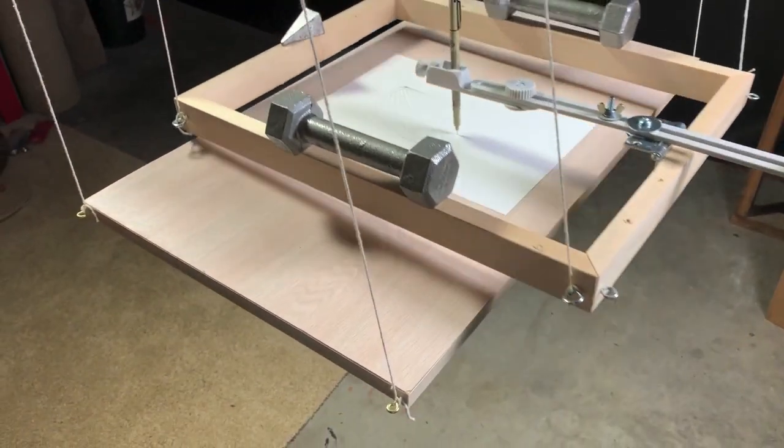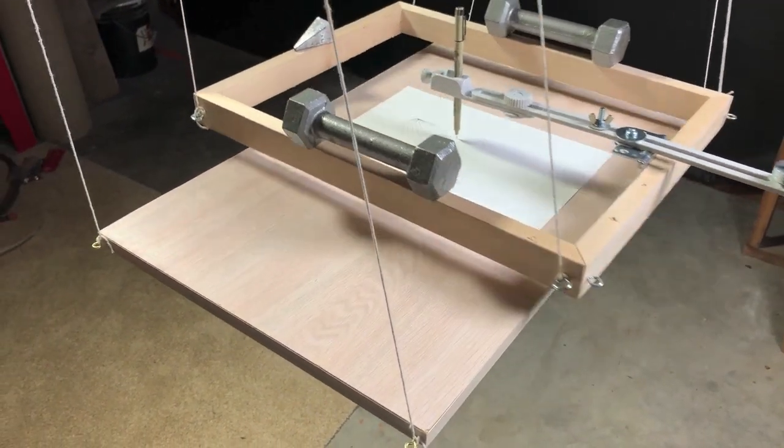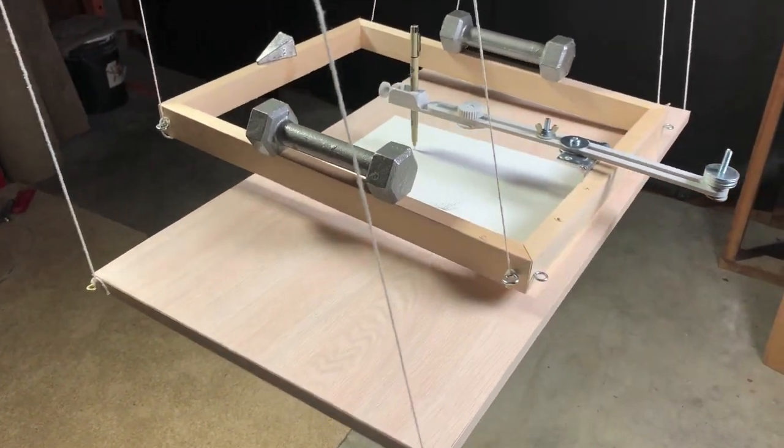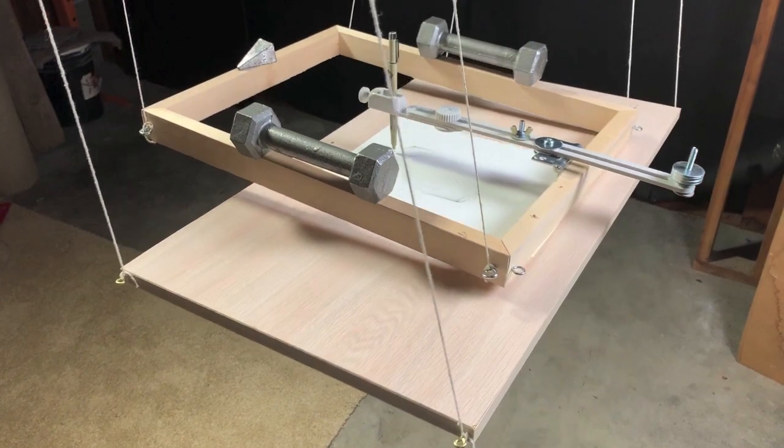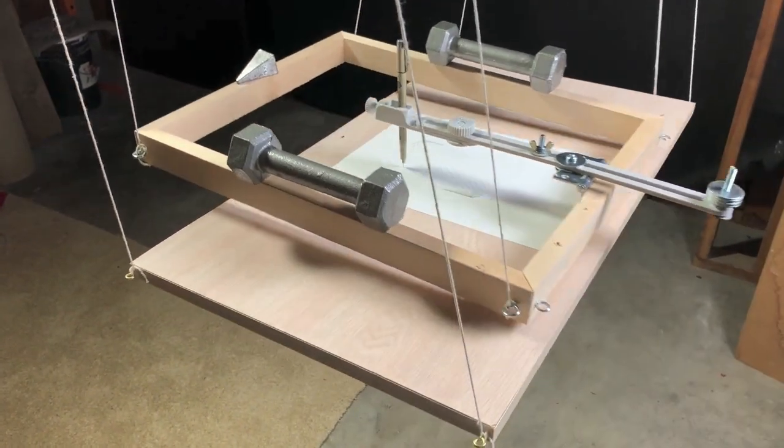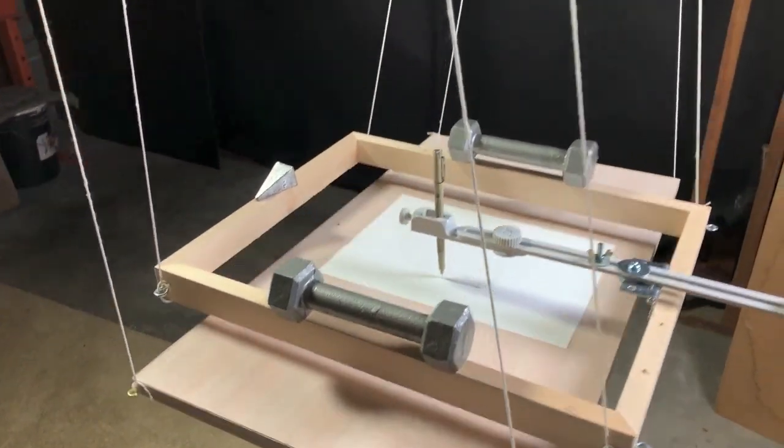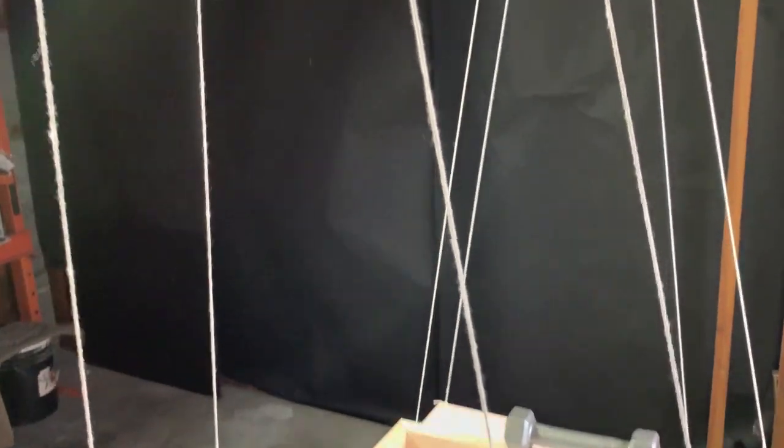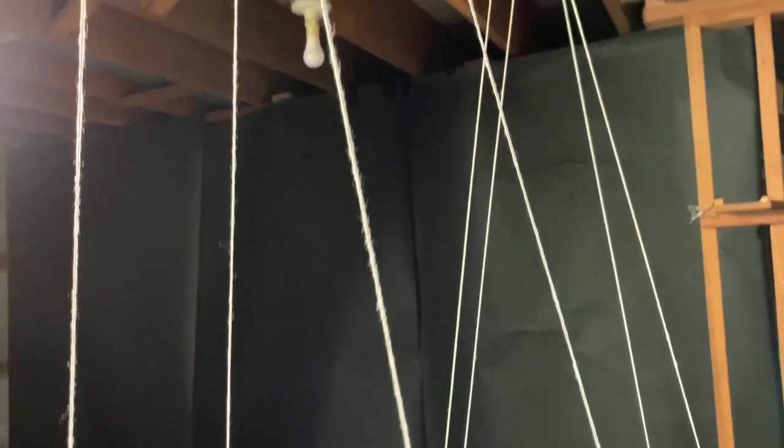The bottom frame has twine that's connected on all four corners and the upper frame also has twine on all four corners. These run through either an open hook or a screw eye at the ceiling level.